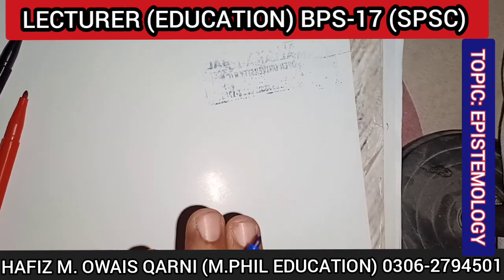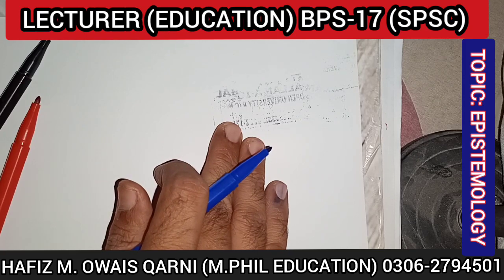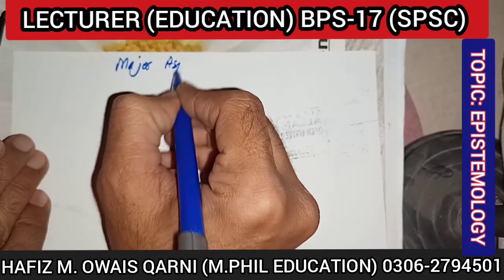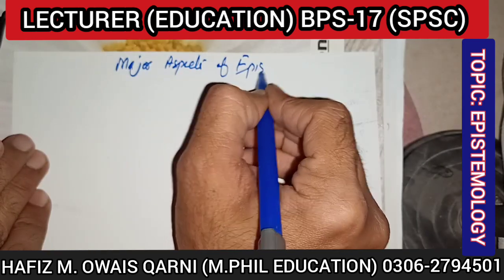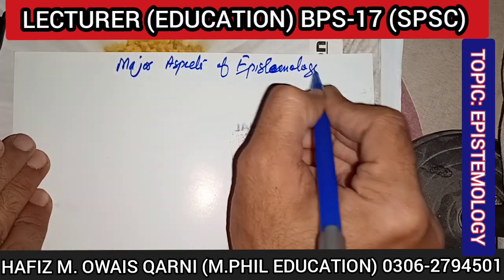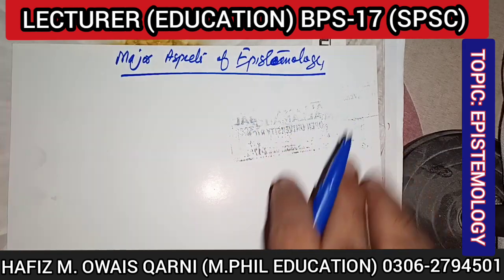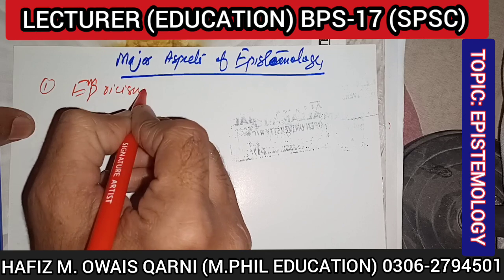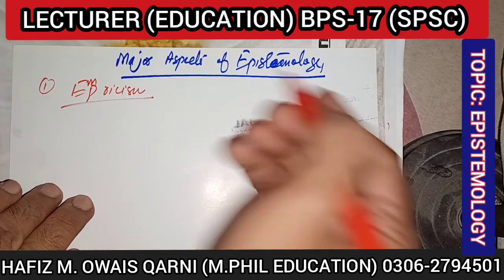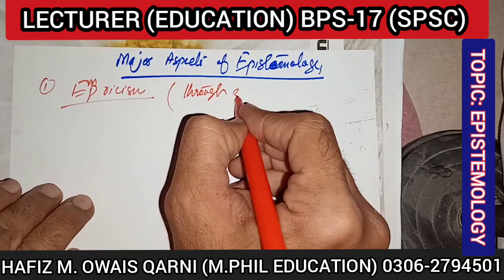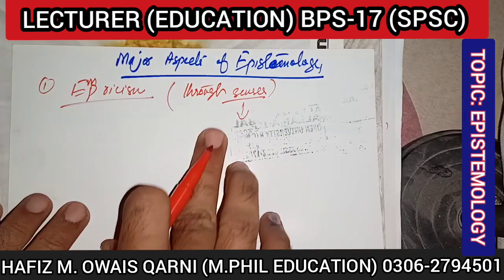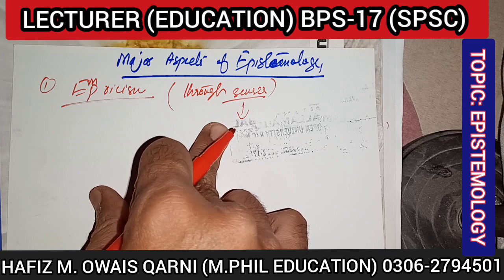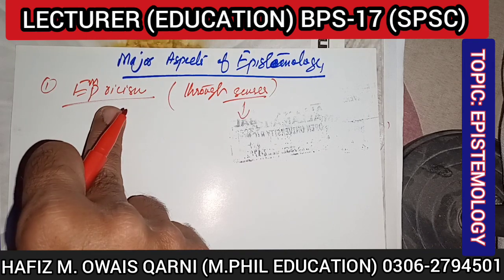Now let's move to the major aspects of epistemology. There are five major aspects. Number one is empiricism. Empiricism means knowledge obtained through the senses. As we know from science, humans have five senses. Whatever information you acquire through your five senses — that is the empiricist aspect of epistemology.